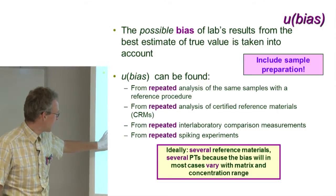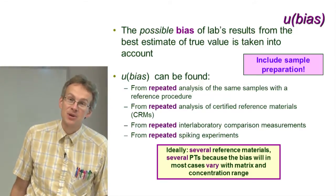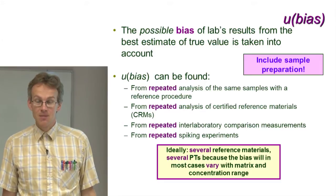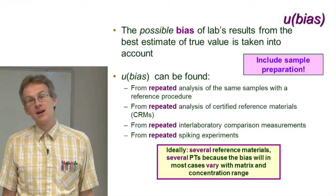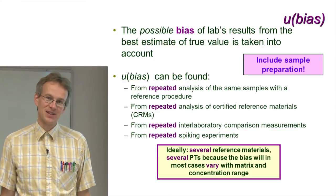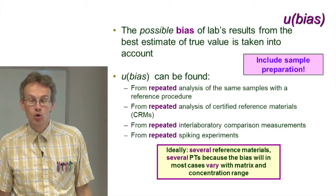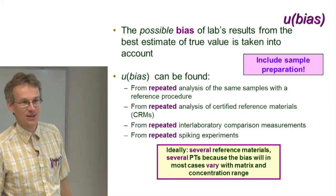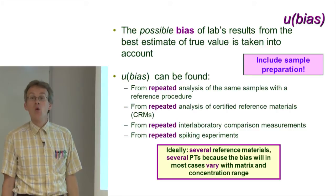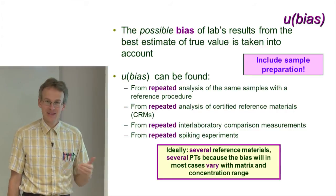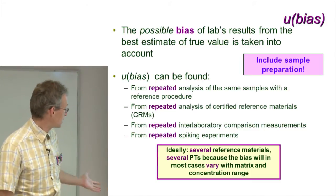Finally, it is also possible to estimate bias from spiking experiments, meaning you have some kind of sample in your laboratory — or even better, a blank matrix where there is no analyte inside. You then add a well-known quantity of the analyte into that matrix and determine by your analytical technique whether you get back as much as you added. The difference between how much you got and how much you added is the bias.